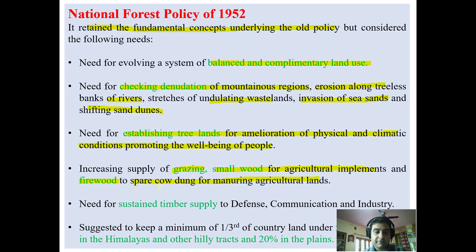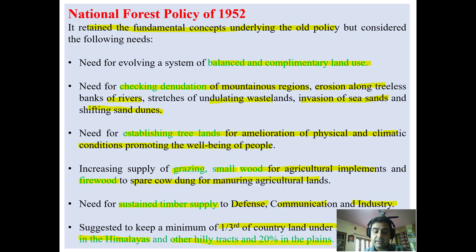Increasing supply of grazing for cattle, small wood for agricultural implements and firewood — these were the social obligations, and by providing firewood, cow dung is spared for manuring agricultural lands. In the National Forest Policy of 1952, sustained timber supply needed to be maintained for defense, communication and industry. For conservation, it was decided to keep a minimum one-third of the country under forests, maintaining 60% of forest land in the Himalayas and 20% in the plains.